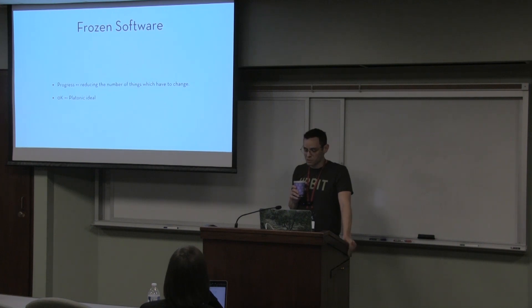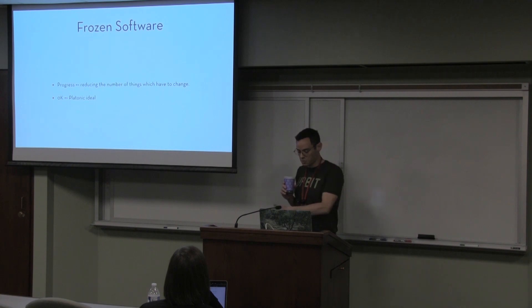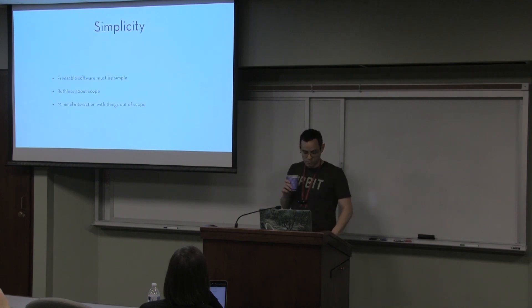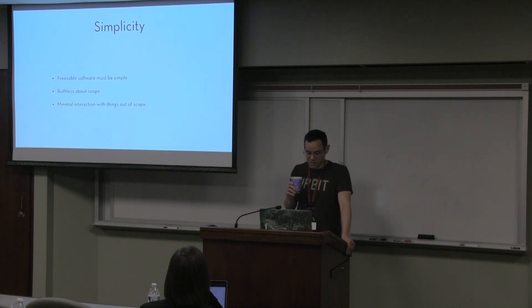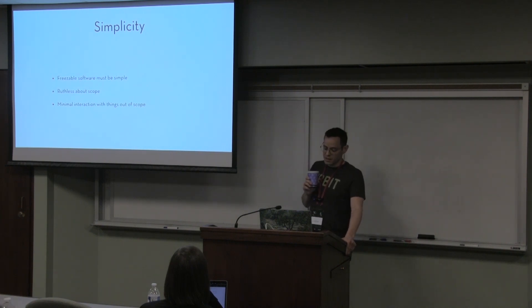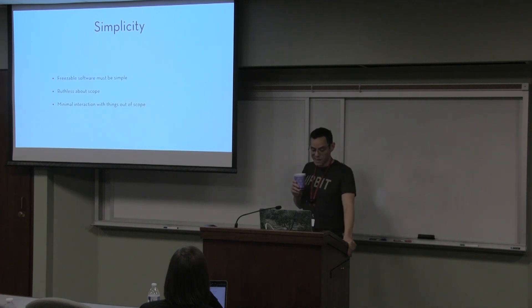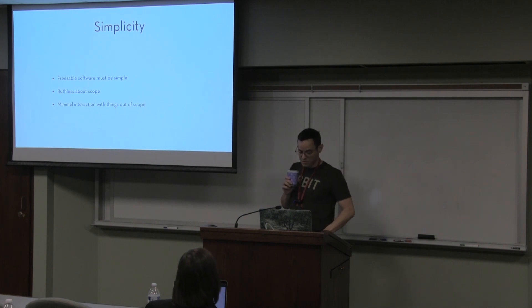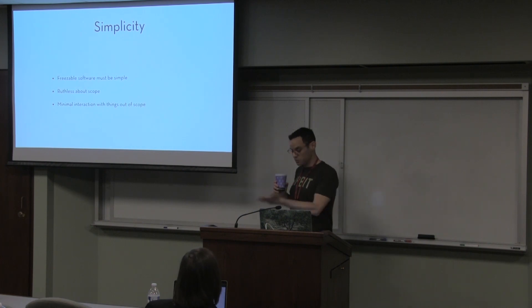This is Kelvin versioning. You have this platonic ideal solution that's version 0K, and every version you get is getting closer to it. To make something you can freeze, you want it to be simple — ruthlessly simple — so you make all your choices about what is in scope and isn't. If it's not in scope, you do as little as possible with it, and by doing so you have the most options available when you actually do something with it.